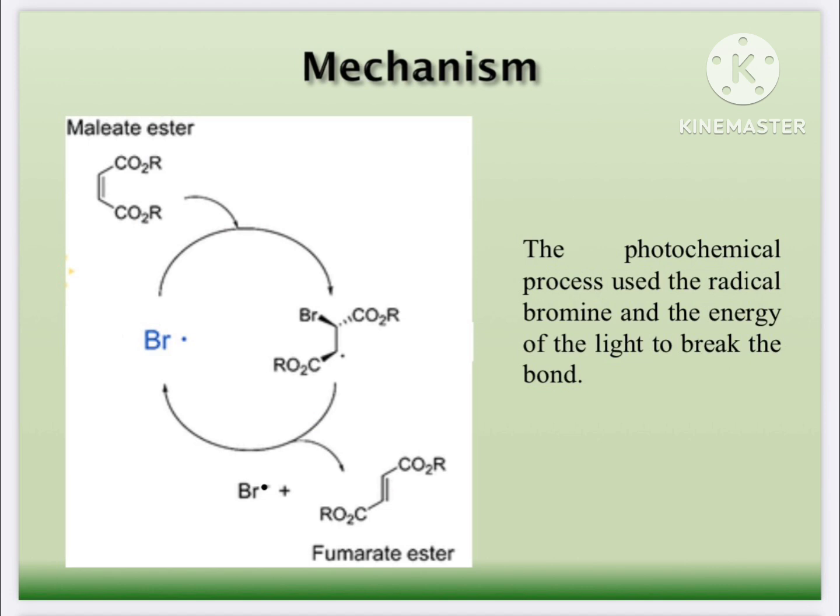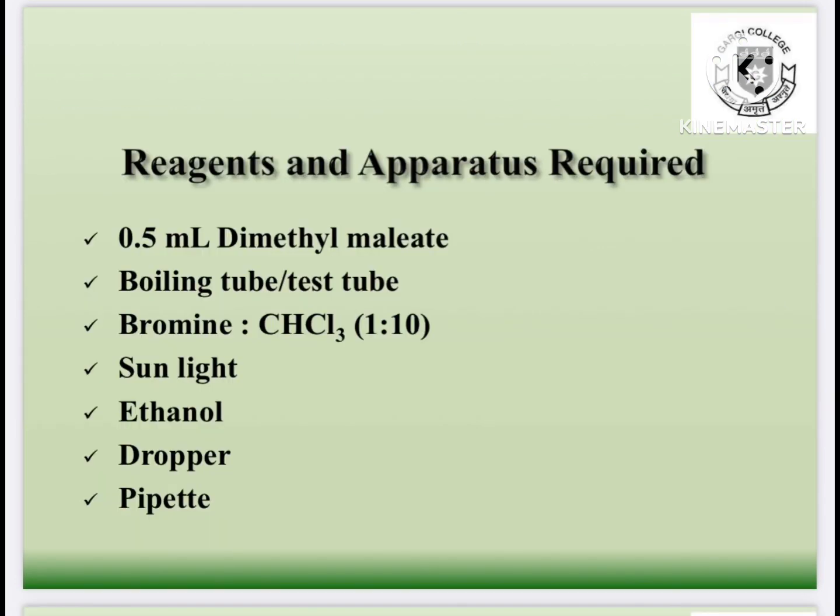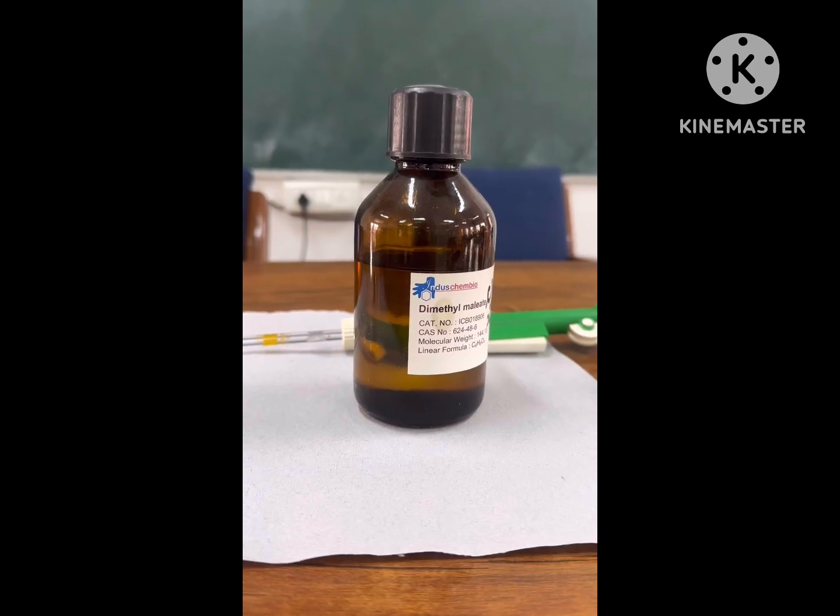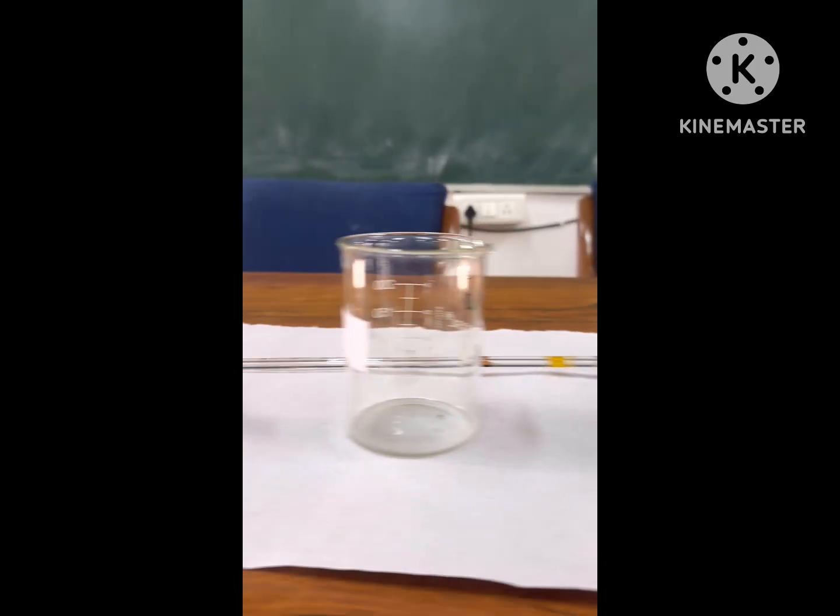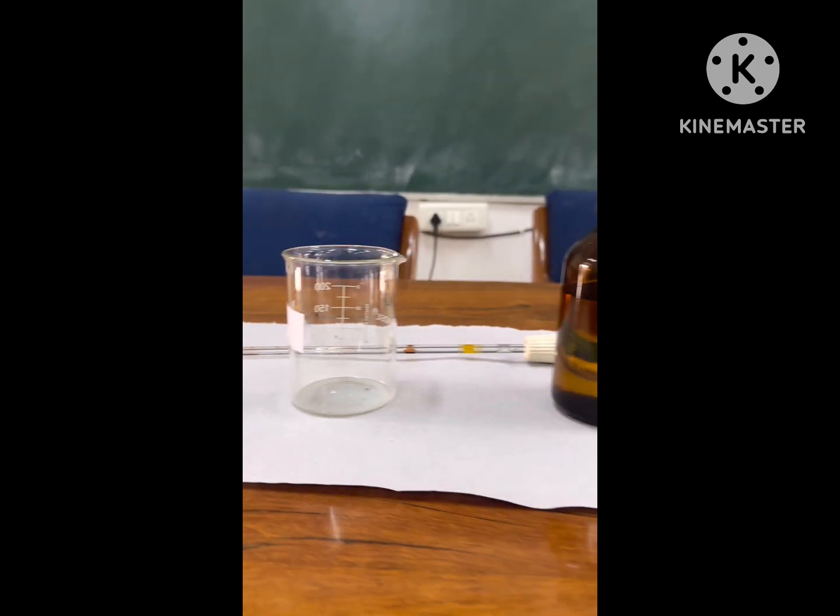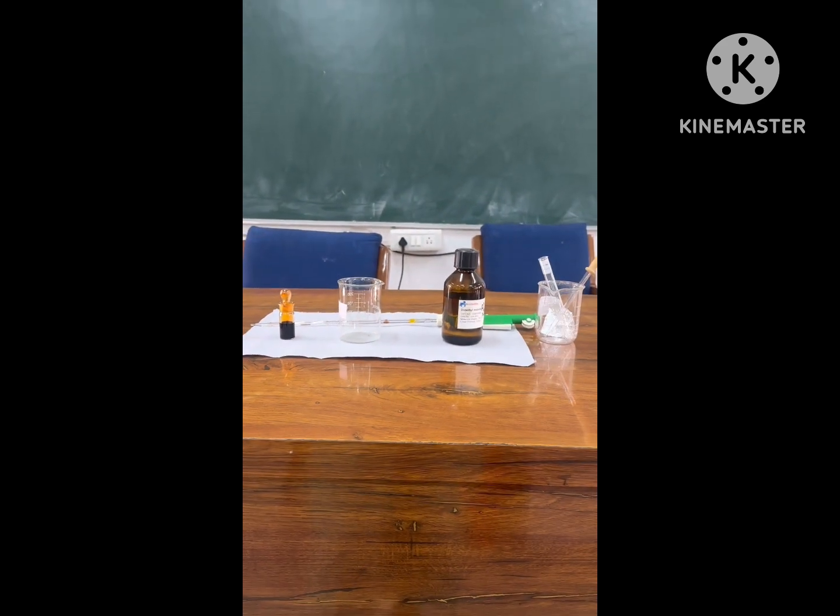For this reaction we require these reagents: 0.5 ml dimethyl maleate, boiling tube or test tube for carrying out the reaction, bromine in chloroform in 1 to 10 ratio, sunlight, ethanol, dropper and pipette. This is the bottle of dimethyl maleate and this is a bromine solution.